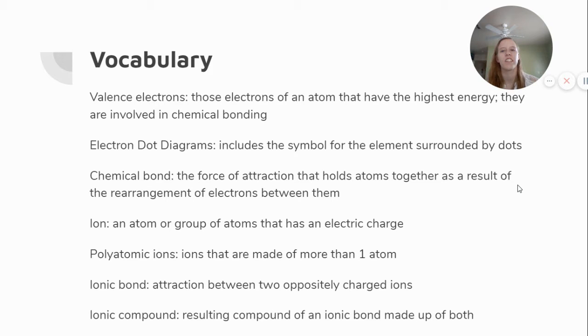We have valence electrons, those electrons of an atom that have the highest energy and are involved in chemical bonding. We have electron dot diagrams, which includes the symbol for the element surrounded by dots indicating how many valence electrons they have. A chemical bond is the force of attraction that holds atoms together as a result of the rearrangement of electrons between them. An ion is an atom or group of atoms that has an electric charge.